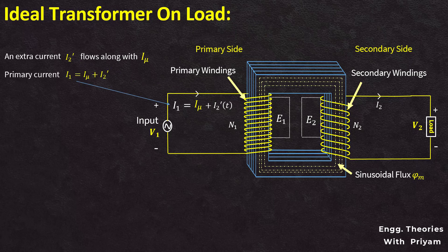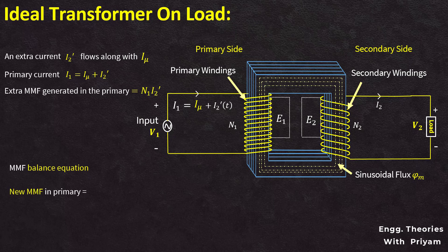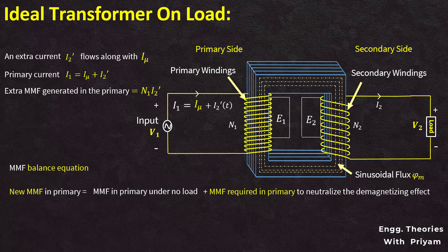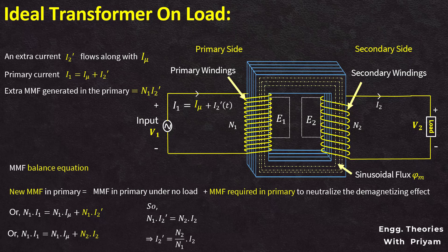So, the primary current I1 is equal to I mu plus I2'. For this additional current I2', extra magnetomotive force generated in the primary winding is equal to N1I2'. From the magnetomotive force balance equation we can say that the new magnetomotive force in the primary winding equals the magnetomotive force under no load condition plus the magnetomotive force required to neutralize the demagnetizing effect of the secondary current I2. Hence, N1I1 is equal to N1I mu plus N1I2'. This N1I2' is equal to N2I2, so we can say that I2' equals N2 by N1 into I2. This N2 by N1 is known as K, the voltage transformation ratio. Based on the value of K, the magnitude of these two currents I2 and I2' can be determined.